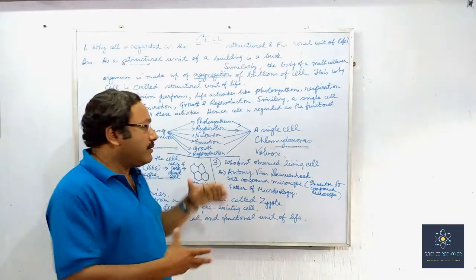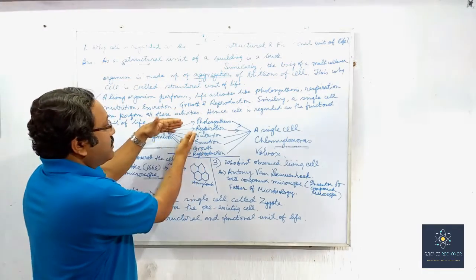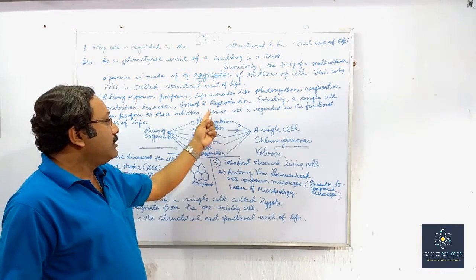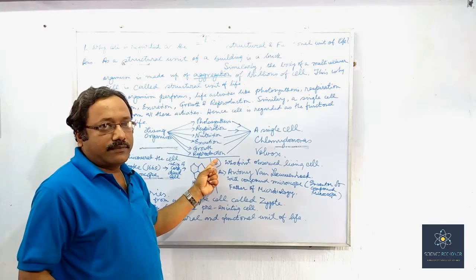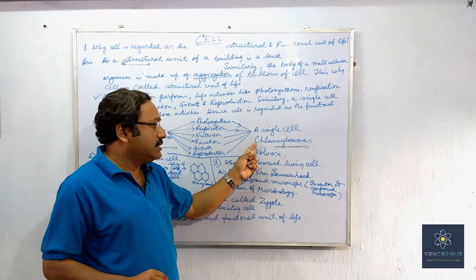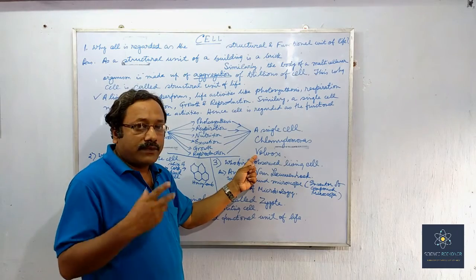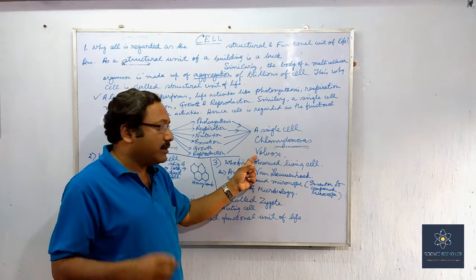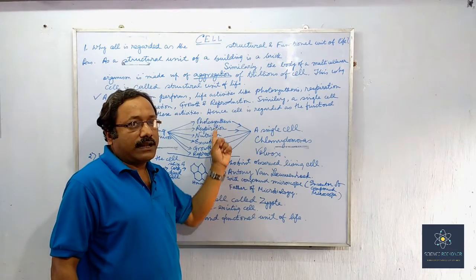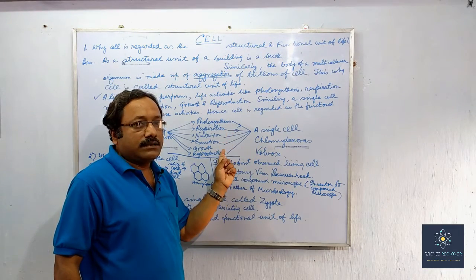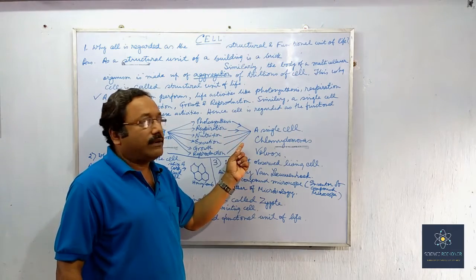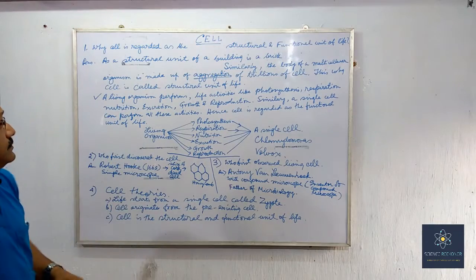A single cell has the capability of performing all these physiological activities. For example, unicellular algae like Chlamydomonas, and also Volvox seen in colonial form — a single cell of these organisms can perform all these physiological activities. The cell has the power to perform all these activities, therefore the cell is also regarded as the functional unit of life.